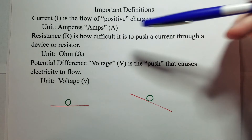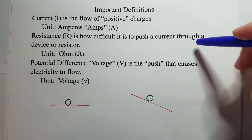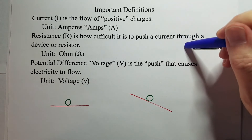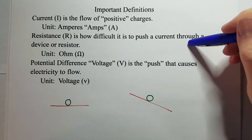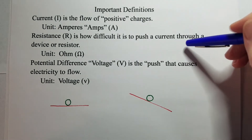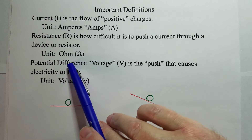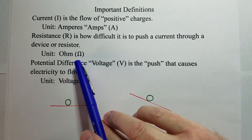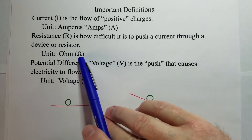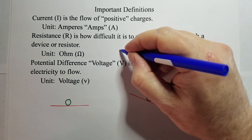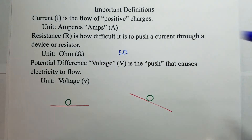Resistance, we use capital R — it's how hard it is to push current through the circuit. I like to use a traffic analogy: at rush hour it's very hard to move, that's high resistance; if there's nobody on the road and you can travel very fast, that's low resistance. It's simply how hard it is for those charges to move through the wire or device. We use ohms for the unit of resistance, and we use the Greek letter omega (Ω) because we can't use 'O' — it looks like a zero. So five Ω means five ohms.